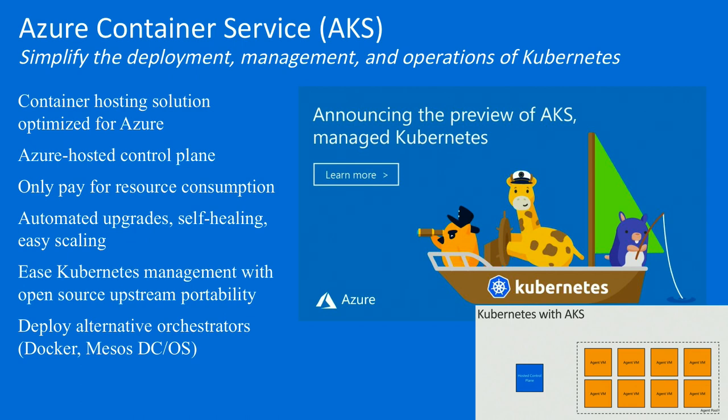If you want to leverage Mesos or Docker Enterprise Edition or Mesosphere, you can go into what we call the Azure Marketplace. In our Azure portal, we have a marketplace where partners can put their products. You can spin up those platforms — Cloud Foundry is one of them. You go into the marketplace, say you want to spin up a Cloud Foundry cluster, we spin it up, and then you get support from Cloud Foundry. Same with Docker, Red Hat, and all of our partners.